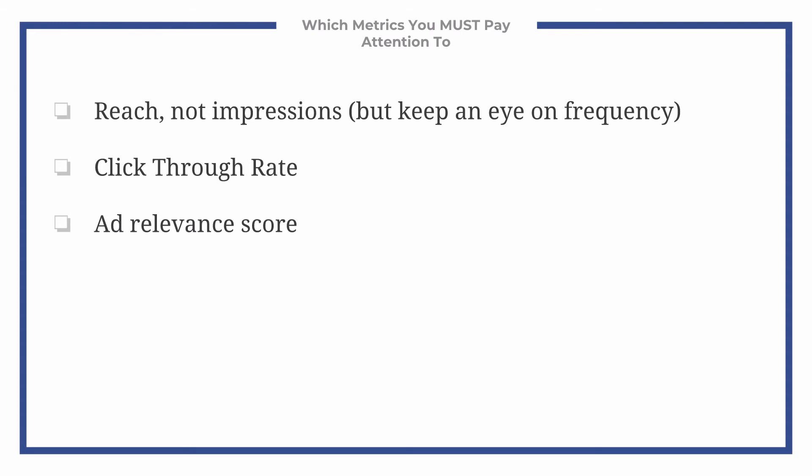The ad relevance score is a Facebook algorithm that tells you how relevant your ad is to the audience you're showing it to. Likes, shares, and clicks count as positives; people hiding or skipping your ad count as negatives. It's on a scale of one to ten, ten being the best. I would target a six or better on ad relevance score. This means Facebook is more likely to show your ad versus a competitor with similar targeting and budget, because Facebook wants to keep people engaged and on platform longer.